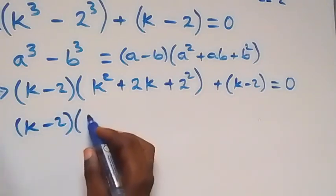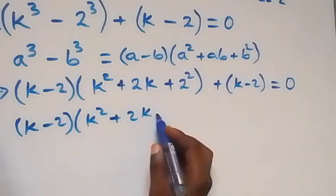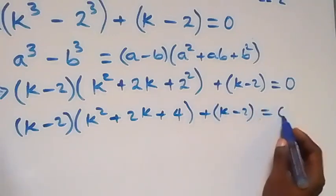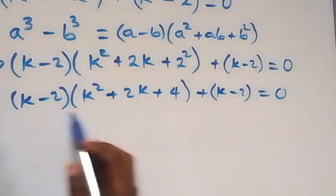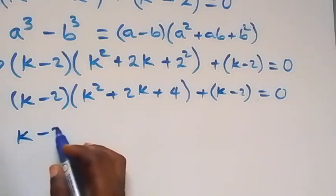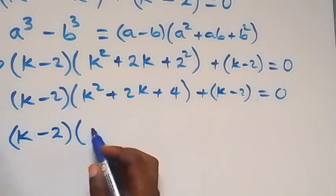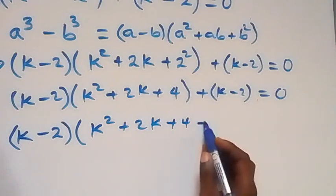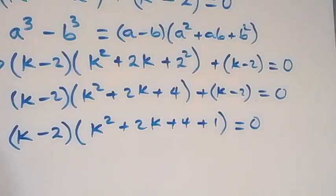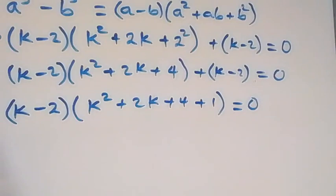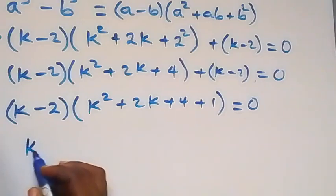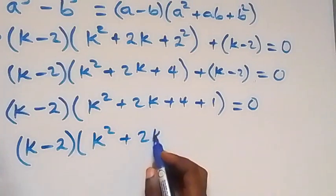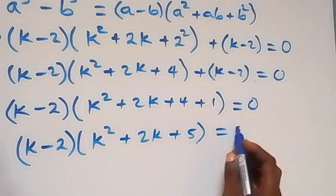Then plus 4, then plus k minus 2 equals to 0. This is the same thing as k minus 2 multiplied by k squared plus 2k plus 5 equals to 0.